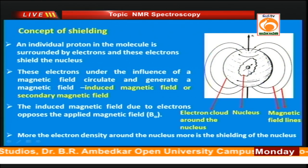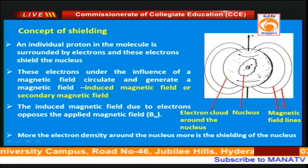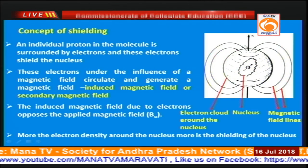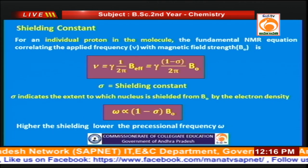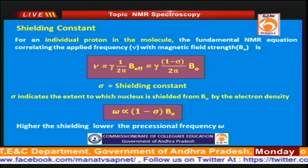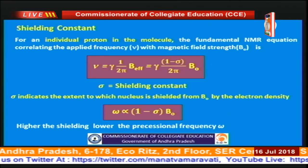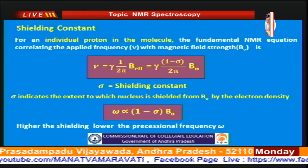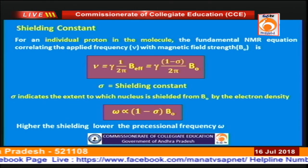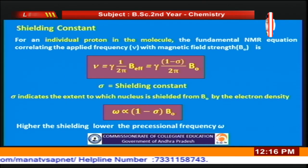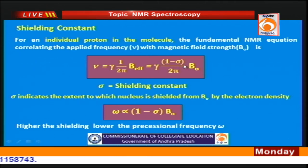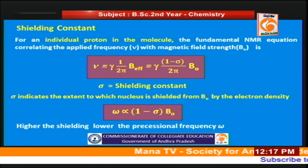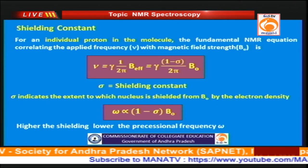Like the protons, electrons also undergo a particular motion in the presence of a magnetic field B₀. Because of the circulation of electrons in the presence of a magnetic field, a second magnetic field is generated, known as the induced magnetic field. This induced magnetic field generally opposes B₀, the applied magnetic field. Because of this shielding we have to modify the basic equation of NMR. Instead of B₀, we use B_eff = (1 − σ) × B₀, where σ is the shielding constant explaining the extent of shielding offered by the electrons surrounding the proton. The greater the shielding, the lower the precessional frequency.